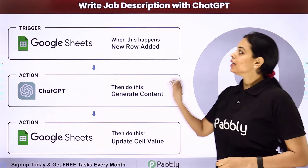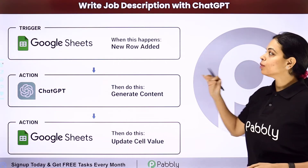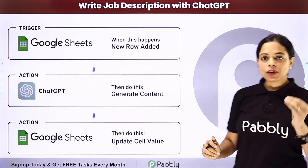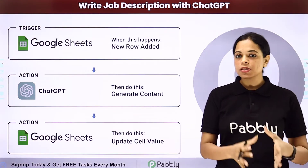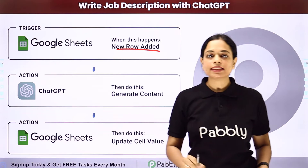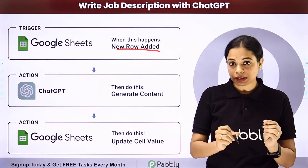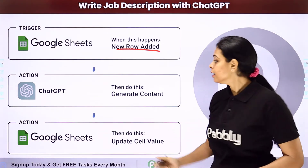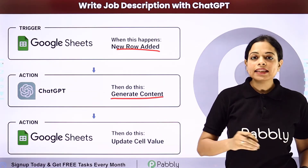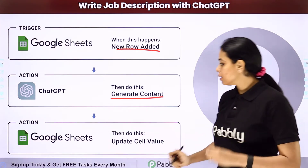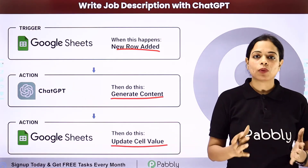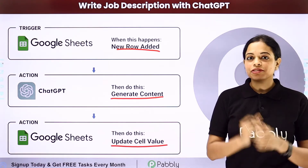In this video, we are going to see how to write a job description with ChatGPT. Let's say you have job titles in your spreadsheet, and every time a new row is added, with the help of ChatGPT, you want to first generate the content, and then that same content should become a part of your Google Sheet as an updated cell value.